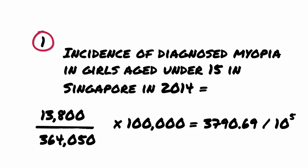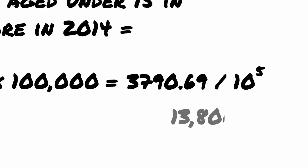In this case, if we had calculated that the incidence was more than 13,800, which is the number of new cases, we would know that there was something wrong in our calculation.